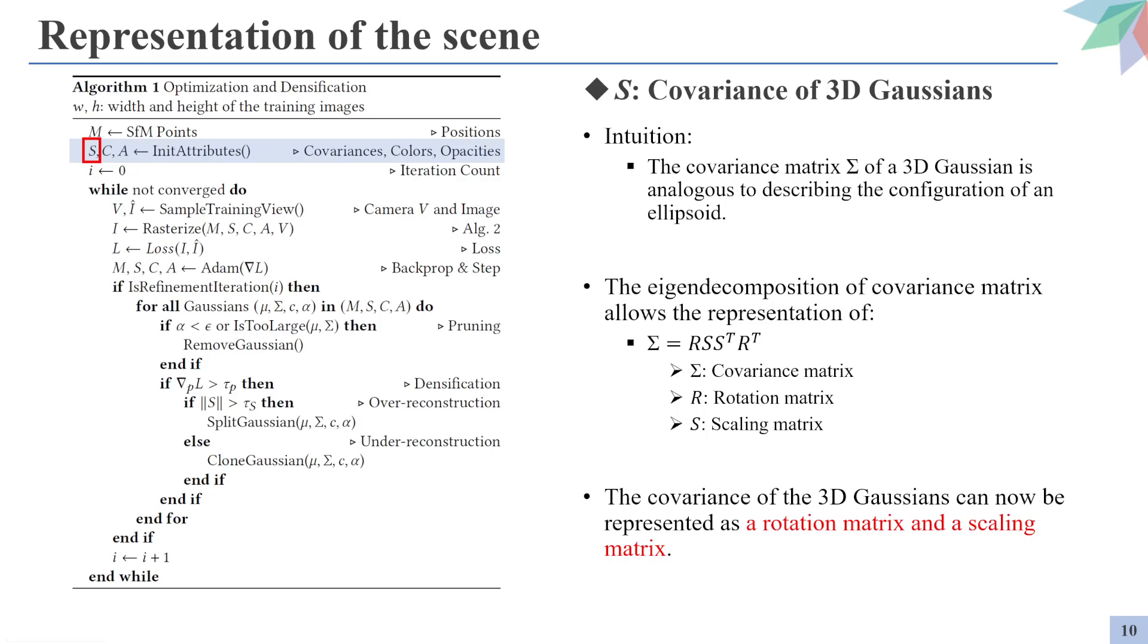The intuition of the authors is that the covariance matrix sigma is in a sense similar to the formula that generates an ellipsoid. An ellipsoid is like a stretched and rotated version of a normal Gaussian distribution, so they decided to formulate the covariance using the rotation matrix and the scaling matrix as in this formula. And in case you want to comprehend the theoretical backgrounds of this formula, you can refer to the eigendecomposition of covariance matrices. And so in conclusion, the covariance of 3D Gaussians are represented using a rotation matrix and a scaling matrix.